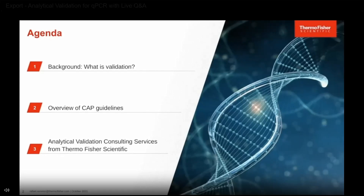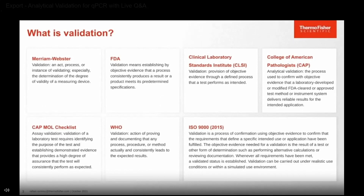Let's talk about what a validation is. There are many different definitions. The FDA states: a validation means establishing by objective evidence that a process consistently produces a result or a product meets its predetermined specifications. The CAP molecular checklist states: a validation requires identifying the purpose of a test and establishing demonstrated evidence providing a high degree of assurance that the test will perform consistently as expected. ISO states: a validation is a process of confirming objective evidence to confirm that the requirements defining a specific intended use or application have been fulfilled.